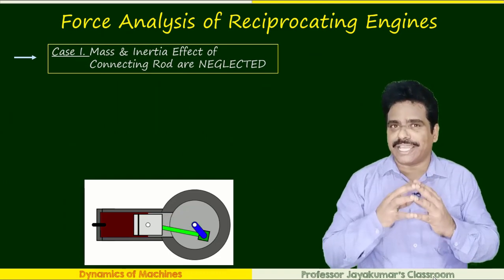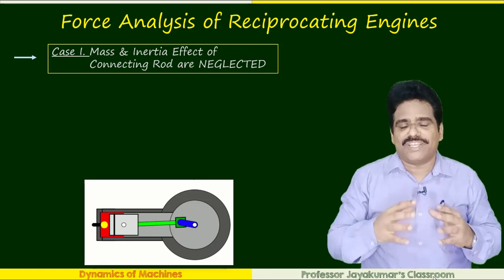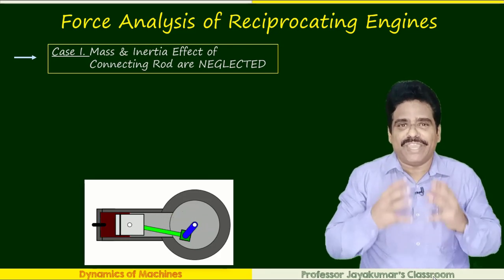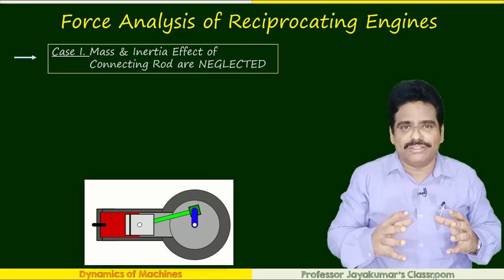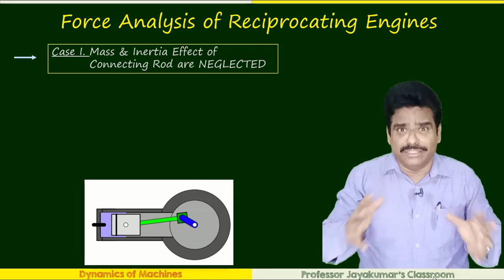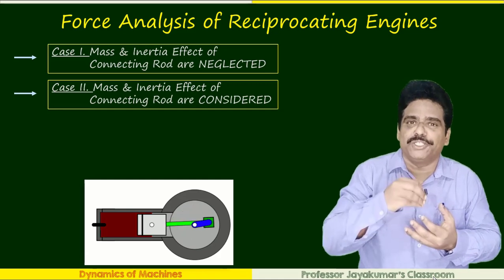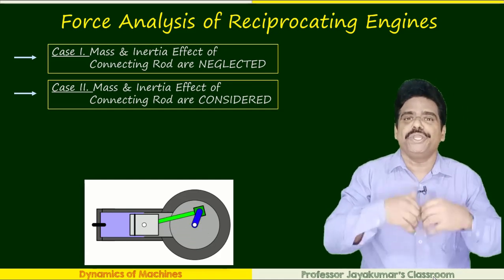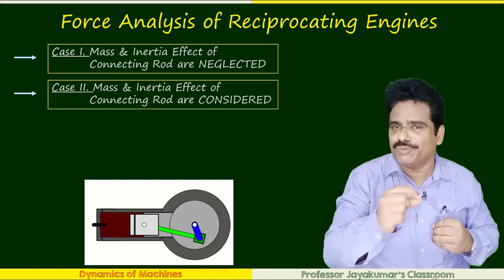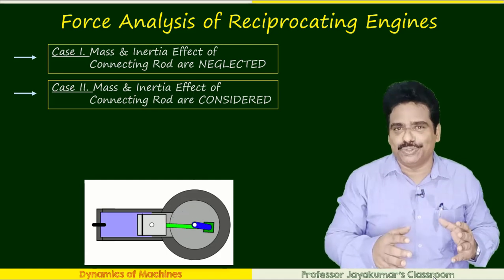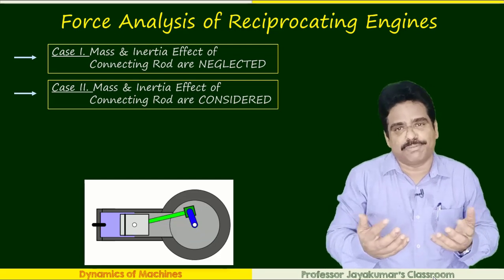Dynamic force analysis can be done for simplicity under two cases. In the first case, the weight and inertia effect due to the connecting rod are not considered — they are ignored. In case two, in addition to the mass and inertia effect due to the piston, we also consider the weight and inertia effect due to the connecting rod.